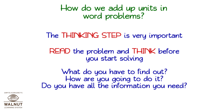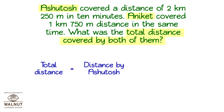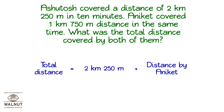Let's try a few. Ashutosh covered a distance of 2 kilometers 250 meters in 10 minutes. Aniket covered 1 kilometer 750 meters in the same time. What was the total distance covered by both of them? What do we have to find out? Total distance. The total distance covered by both — Ashutosh and Aniket. So total distance equals distance covered by Ashutosh plus distance covered by Aniket.